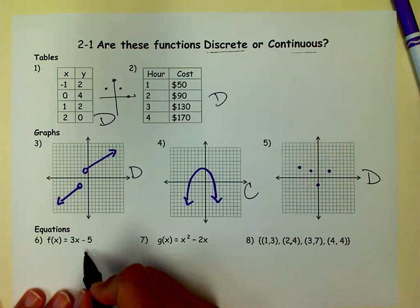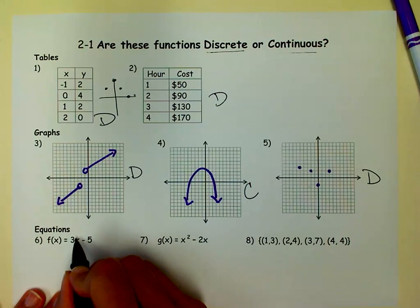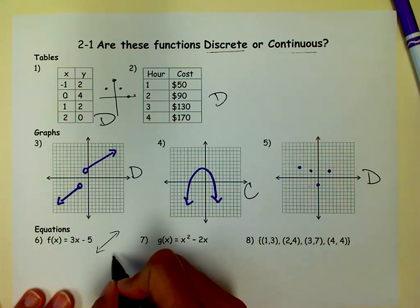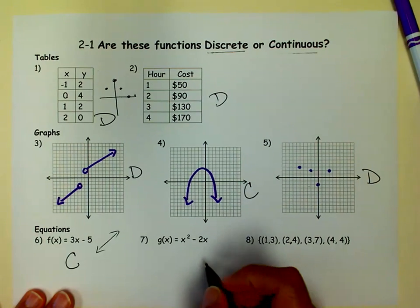When you get to equations, it's important to know what that is. This is a linear equation. It's a line. Anywhere on there I can get, if I just follow that line, it's continuous. I don't have to jump from one part to the other. So that's continuous.